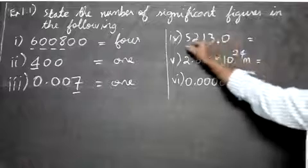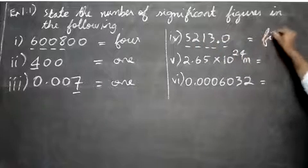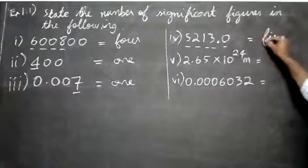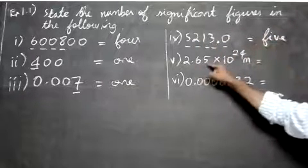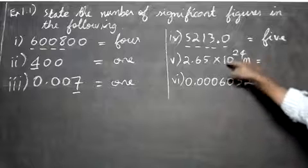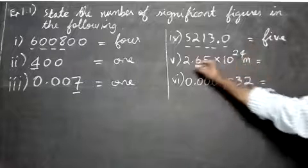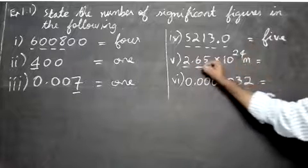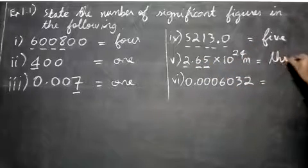The next one: 2.65 × 10²⁴. The 10²⁴ part has no significance, so one, two, three — just three significant digits here.